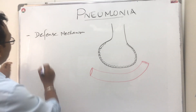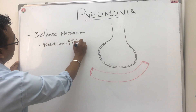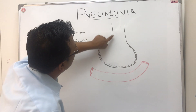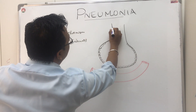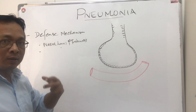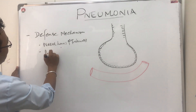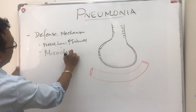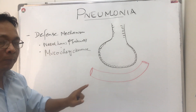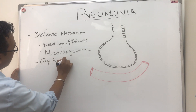We start from the nose — nasal hairs and turbinates, which are mechanical factors. Then there is ciliary mucociliary clearance, which is also a big factor that obstructs bacteria from reaching the lung. And then all the protective reflexes — you have to mention names like gag reflex and cough reflex.